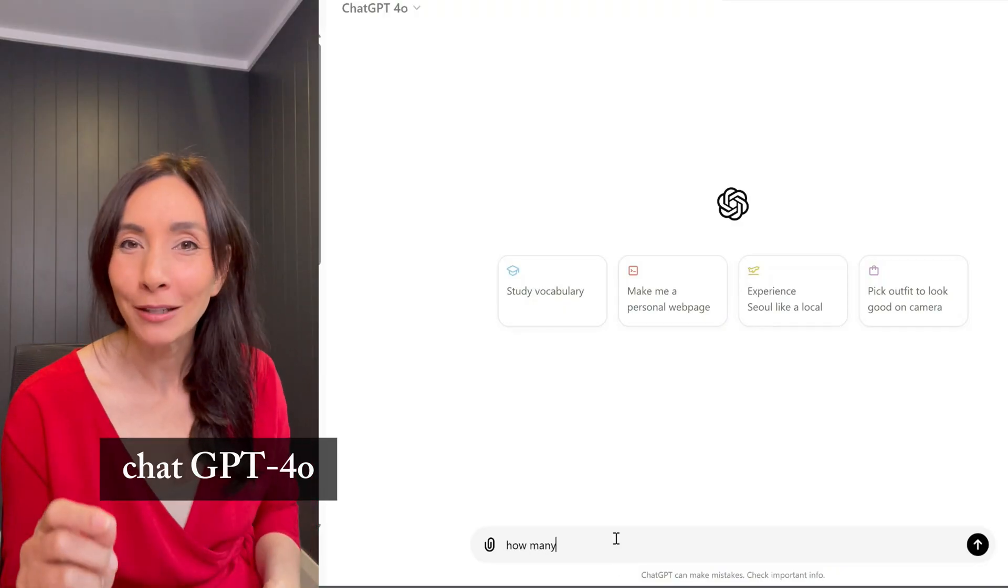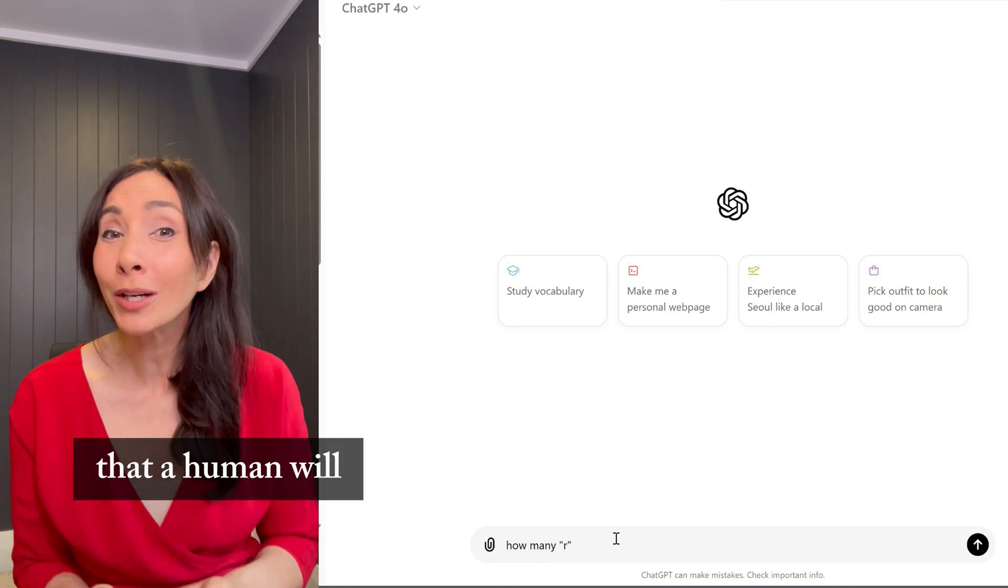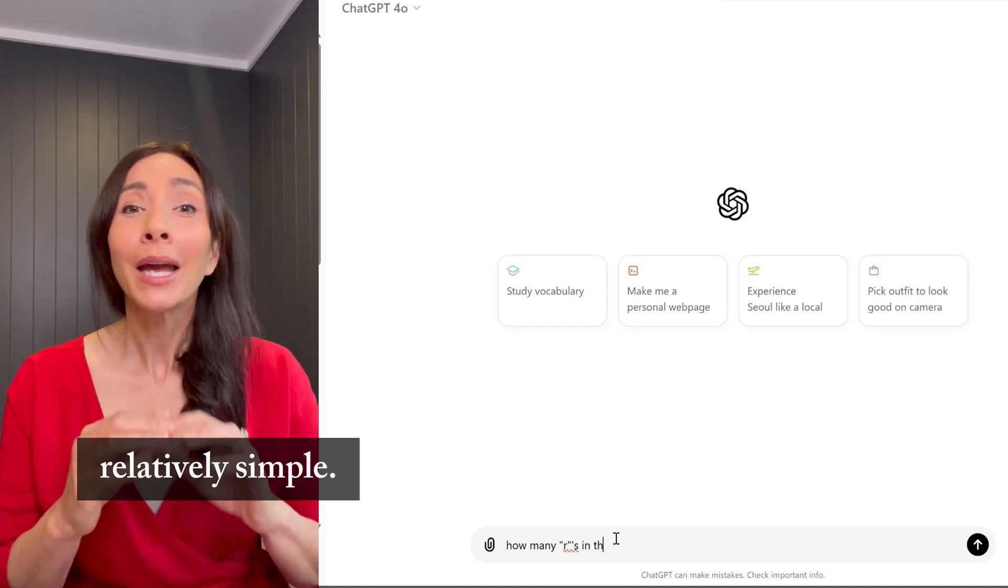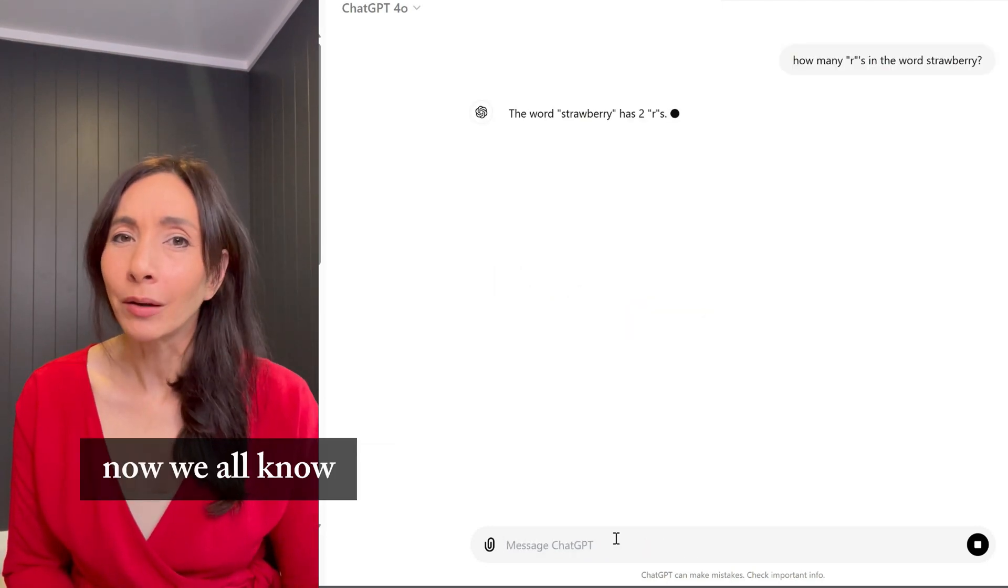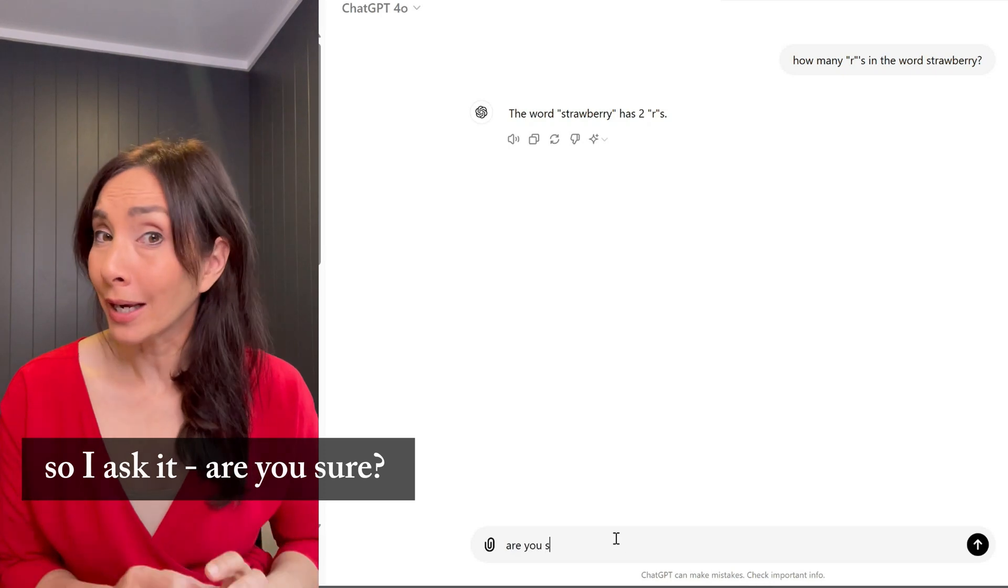I'm going to ask ChatGPT-4O a question that a human will consider to be relatively simple. How many R's are in the word strawberry? So the word strawberry has two R's. Now, we all know that's not true, so I ask it, are you sure?